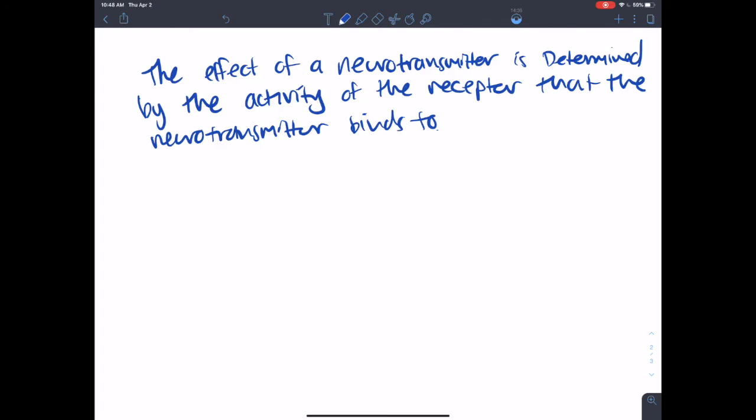And those are going to be excitatory because when they open, they allow sodium in and all the stuff you know about excitatory neurotransmitters. For example, GABA and glycine are going to let chloride in.